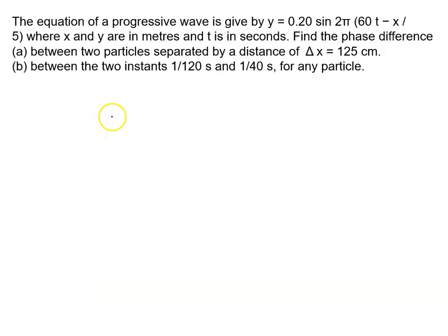The equation of a progressive wave is given by y equals 0.20 sin 2 pi bracket 60 t minus x upon 5, where x and y are in meters and t is in seconds.